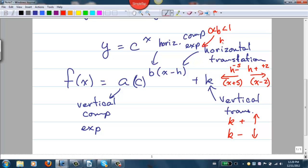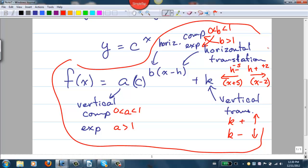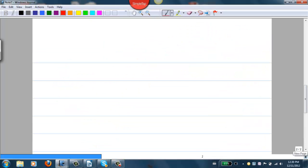If b is greater than 0 and less than 1, we get a horizontal expansion. And if b is greater than 1, we get a horizontal compression. If a is between 0 and 1, we get a vertical compression. And if a is greater than 1, we get a vertical expansion. So for b and h, opposite of what they look like. For a and k, they are what they look like.